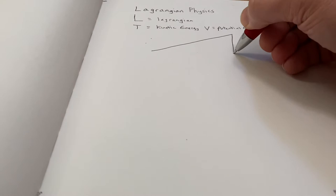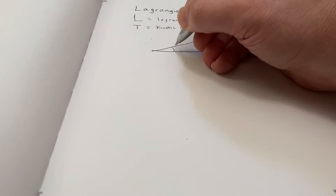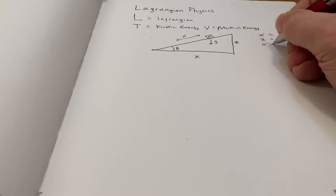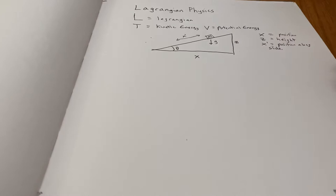T is the kinetic, V is the potential. V would be gravitational potential. I'm going to solve a very simple introductory problem, which is just a mass sliding on a frictionless inclined plane under gravity, G. So I'm going to define X as the position along the X axis and Z as the height above the ground. And I'm also defining X prime as a position along the inclined plane.